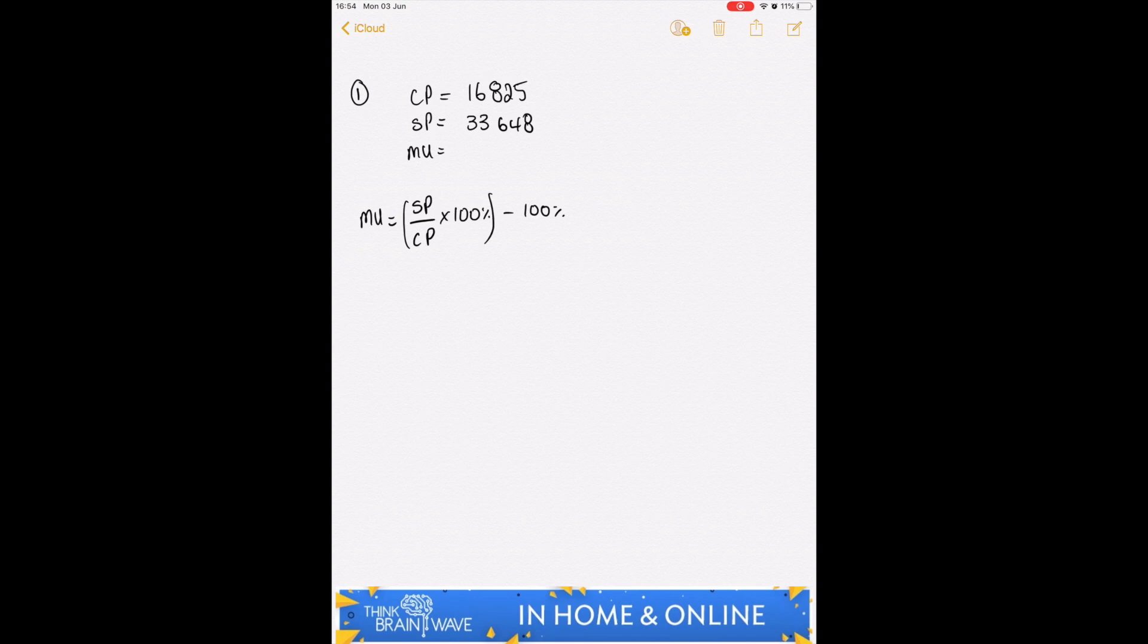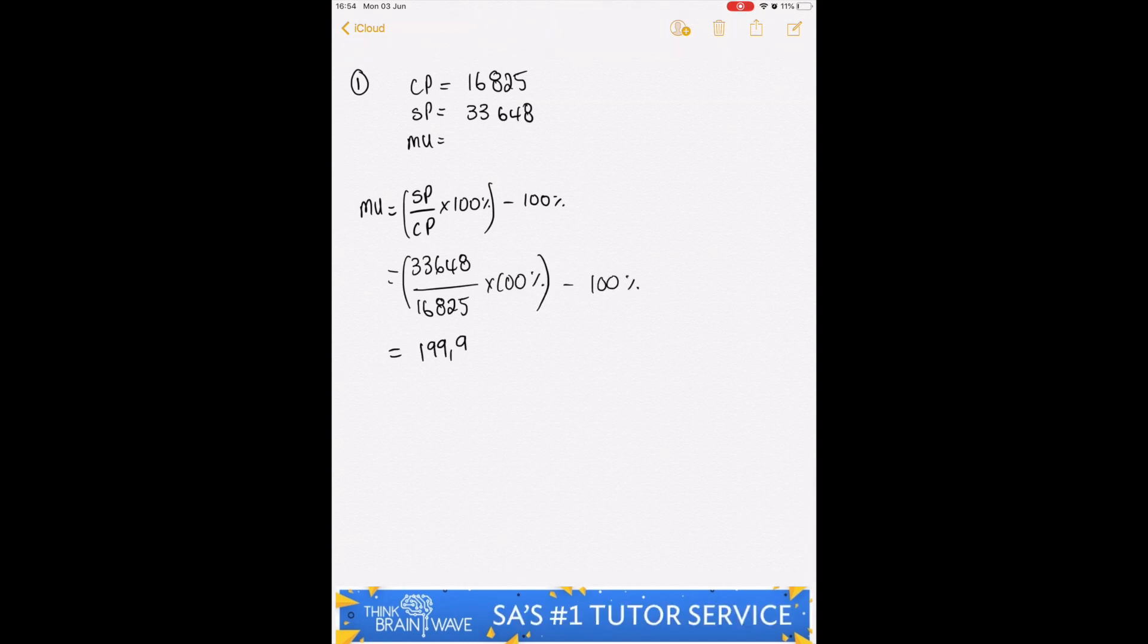So it's selling price divided by cost price times 100 percent minus 100 percent. Let's calculate that. We get 199.99 percent, subtract 100, and we're left with pretty much 100 percent.